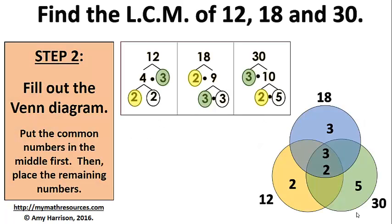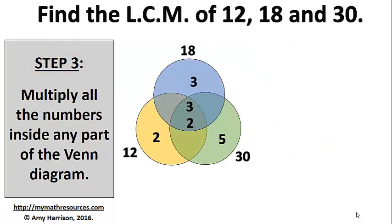The second step is also the same. We fill out the Venn diagram. Instead of just multiplying the numbers in the center of the Venn diagram, we need to multiply all of the numbers that are anywhere on the Venn diagram at all.